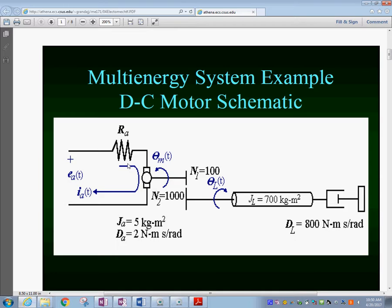That motor produces an angular velocity right here, and then we have this angular velocity that gets transmitted to another gear over here. Through the shaft it gets transmitted to this particular load, like a flywheel, and it has some damping in here.